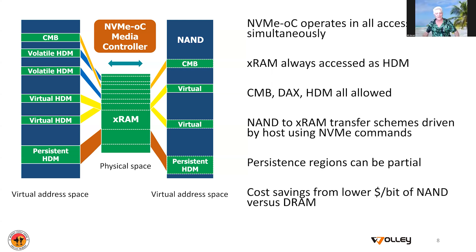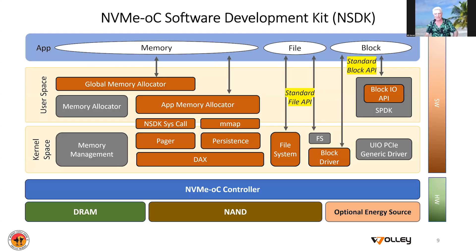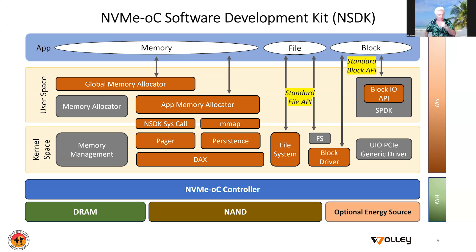The bottom line is this gives you a lower cost per bit, because you're using NAND more efficiently as a resource — which, as we all know, is much cheaper than DRAM. The places where we're making driver changes to allow all of these applications to work independently are highlighted in the architecture diagram, and we'll be putting these driver changes up on GitHub as part of this overall project.